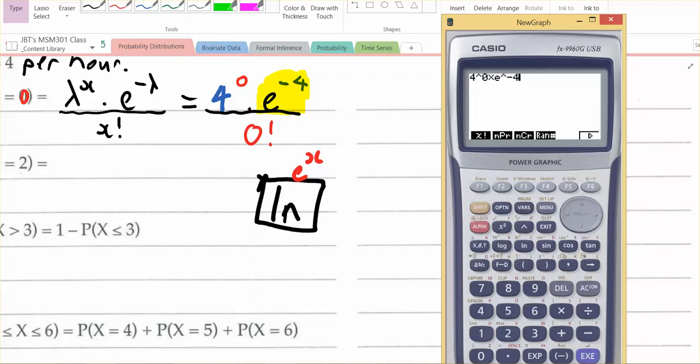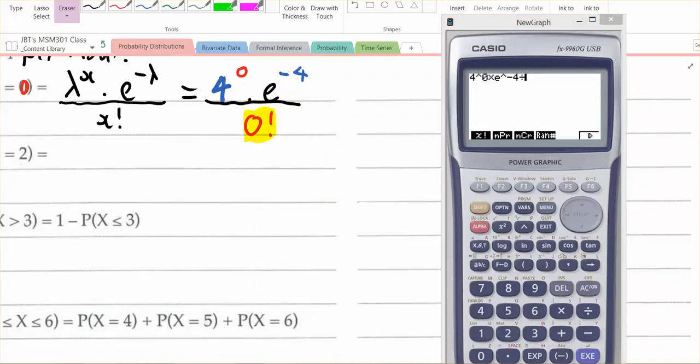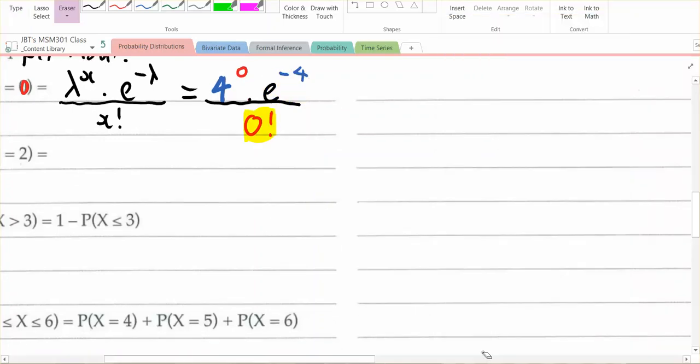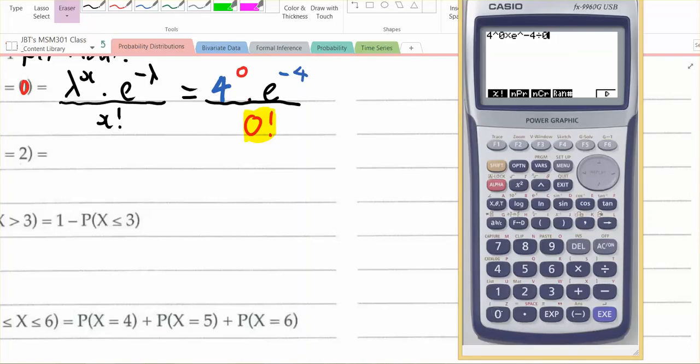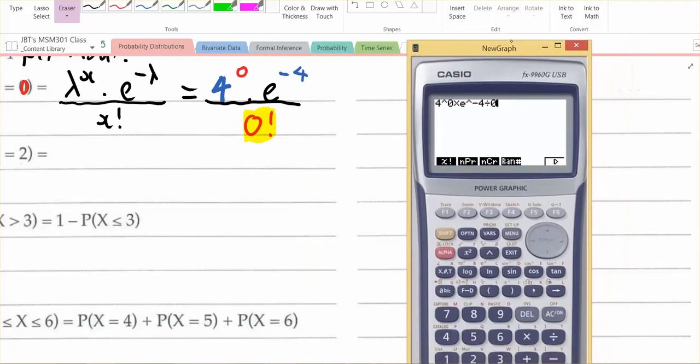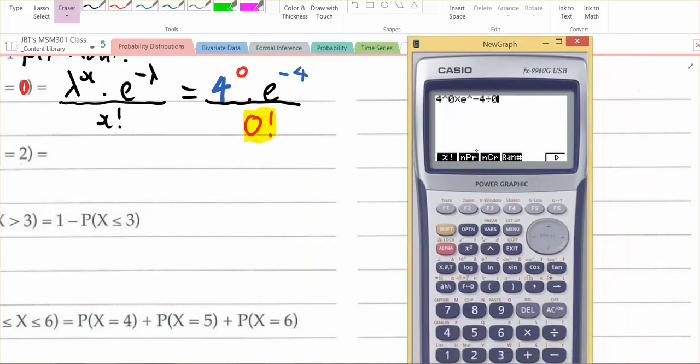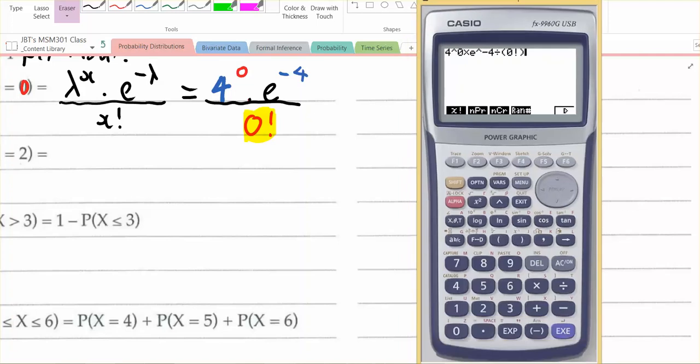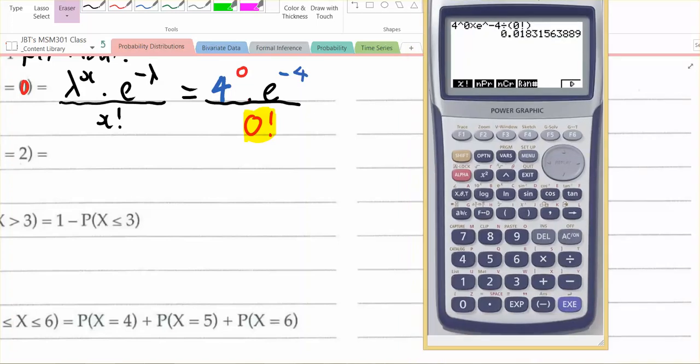Now, I'm going to divide all that by 0 factorial. So this is where I go 0, 0, and to get the factorial, see, I'm in probability mode, so it's just F1, gives me the exclamation mark. Now, it's important to put brackets around our denominator, so I'm going to go bracket 0 factorial, close bracket, it's the only place where we need brackets here, and execute. And there's my answer.